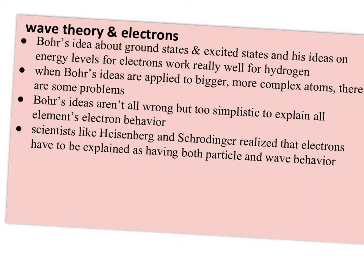Bohr's idea about ground states and excited states and his ideas on energy levels for electrons work really well for hydrogen. But when his ideas are applied to bigger and more complex atoms, there are some problems. It's not that his ideas are all wrong, but mostly they're too simplistic to explain all elements' electron behavior. Scientists like Heisenberg and Schrodinger realized that electrons have to be explained as having both particle and wave behavior.